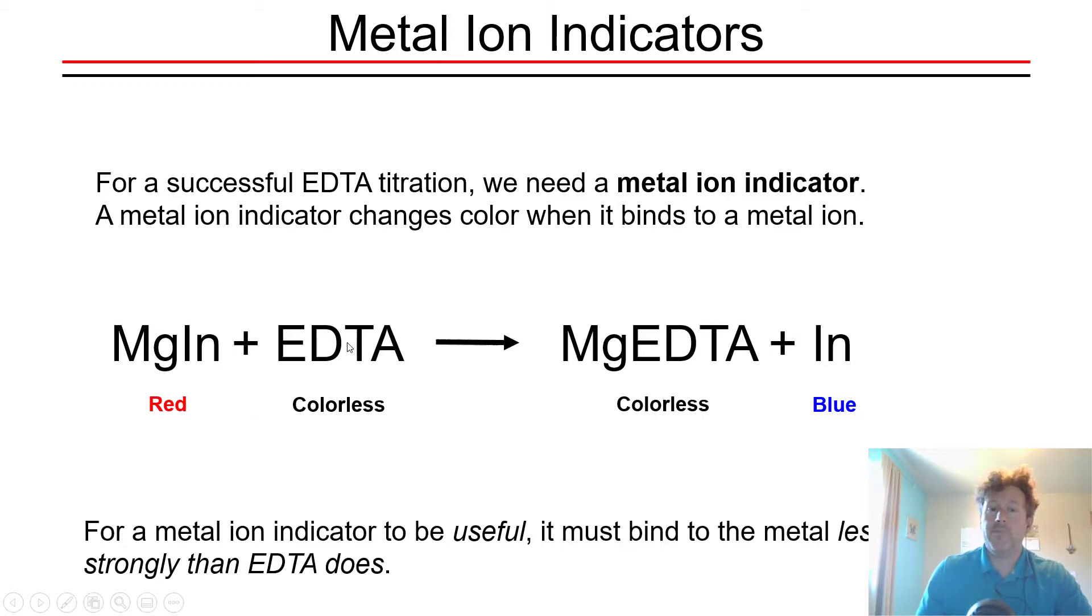When EDTA displaces the indicator—and that will always be favored at equilibrium due to the large binding constant of EDTA—the metal-EDTA complex is colorless and the release of the indicator ligand from the metal ion changes the color of the indicator and hence the color of the solution. So there's a lot going on in an EDTA titration.